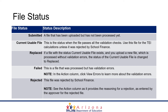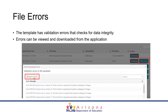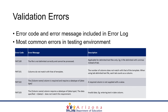If for whatever reason the file is replaced or the template failed, you'll want to view the validation errors by clicking that button, fixing the errors, and then re-uploading the corrected file. In some cases, School Finance may reject a file. The validation errors that you will see if you have a file that failed will show with an error code and error message, along with which column and which row the error is for. These are the most common errors encountered during the testing environment.